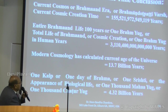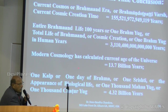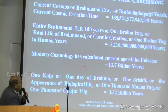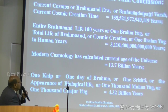Modern cosmology — you will see in that paper presentation — calls it only 13.7 billion years, but we calculated 33 trillion. So why is there a difference? Currently, cosmic scientists have calculated and explored only one third of the universe.